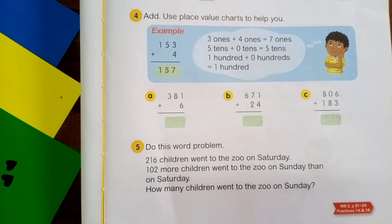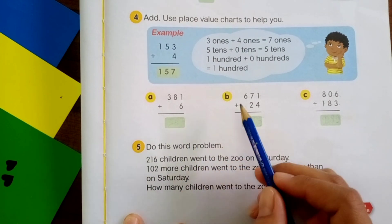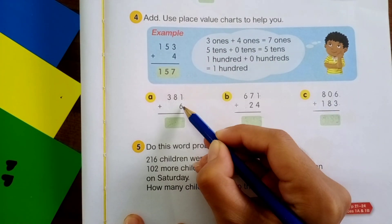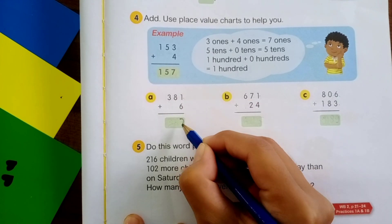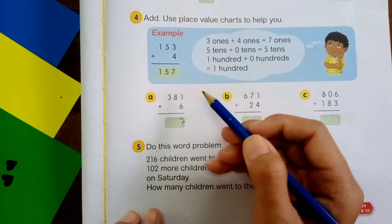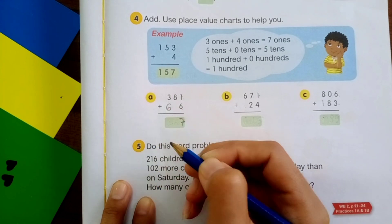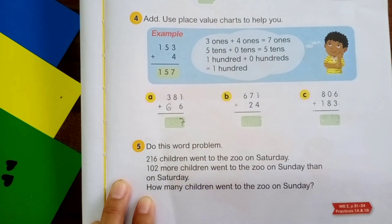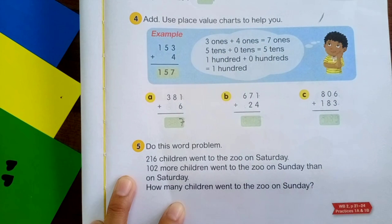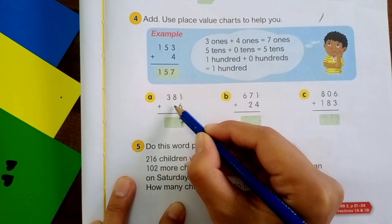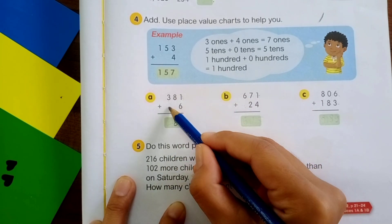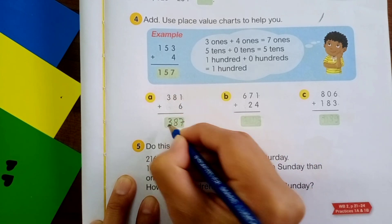Students, let's do this together. We're going to do A, B, and C. Start from A. 1 plus 6 is equal to 7. Good. Remember, 6 is ones. So we put it under ones. If you write 6 here, that is wrong because 6 is not hundreds here. 6 is ones. Next, 8. There is no tens here. So we just write 8. There is no hundreds here. So we just write 3. Good job.